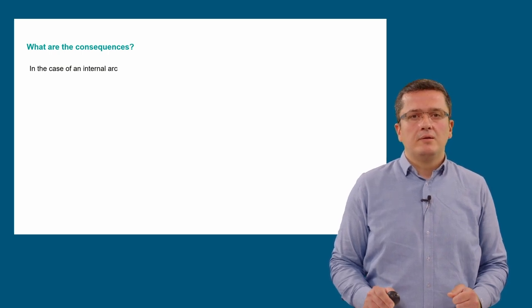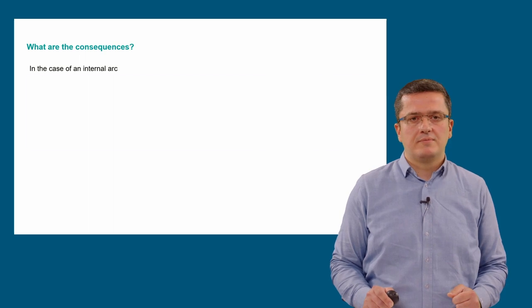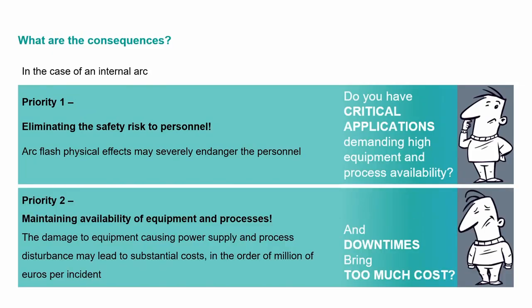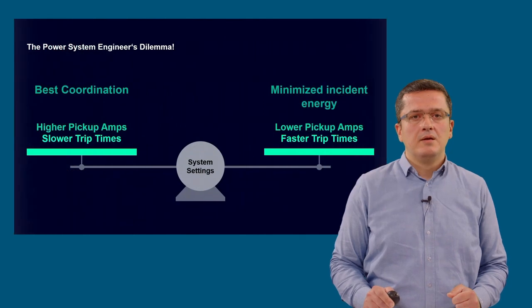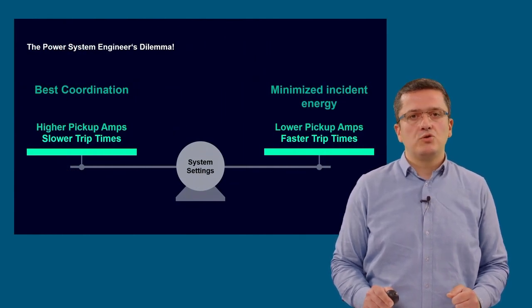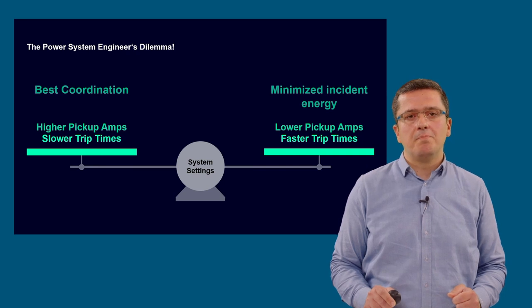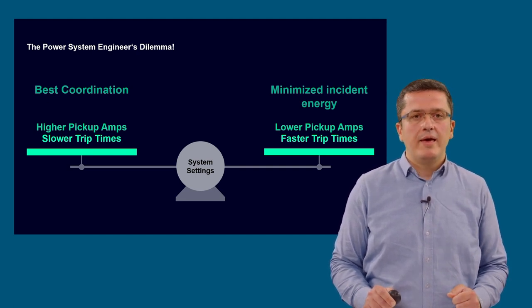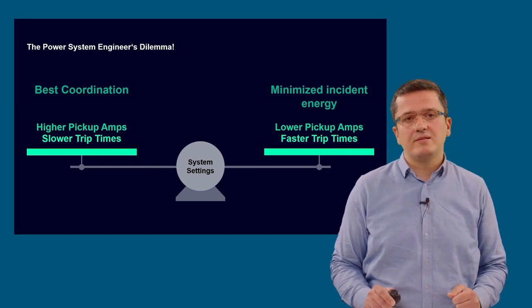In the case of an internal arc fault, priorities are clear to every one of us. First is to protect the personnel, as it may endanger their lives. Second is to keep the equipment and related processes available, as it may lead to substantial economic losses for the business. System engineers are in a dilemma. They should find the optimum balance between the best possible coordination settings to minimize the effects of unplanned shutdowns and the best possible safety of personnel. And each usually means sacrificing the other.